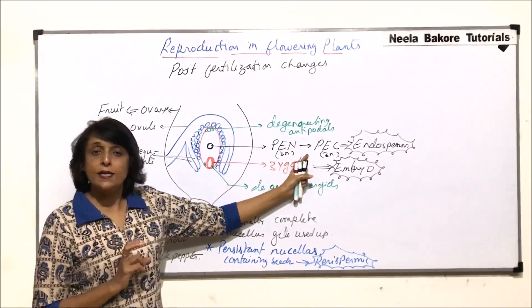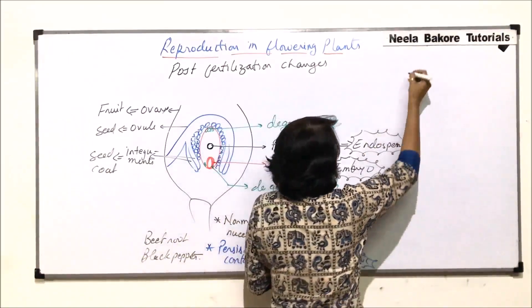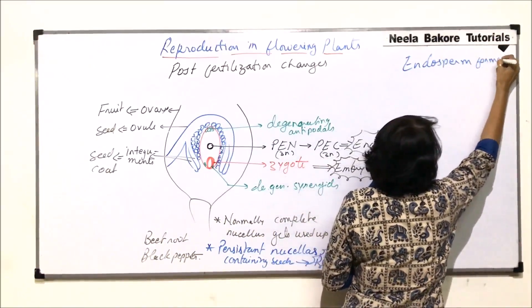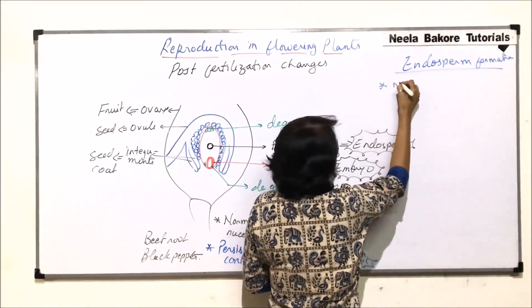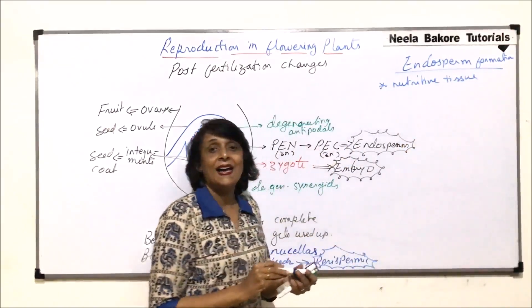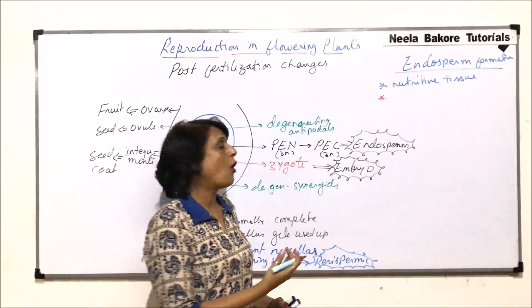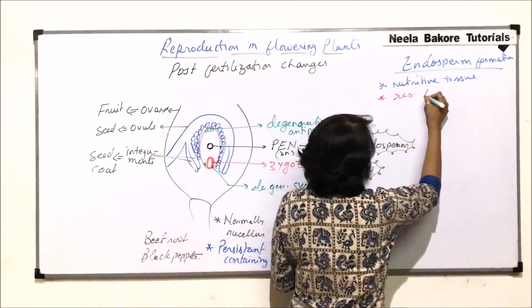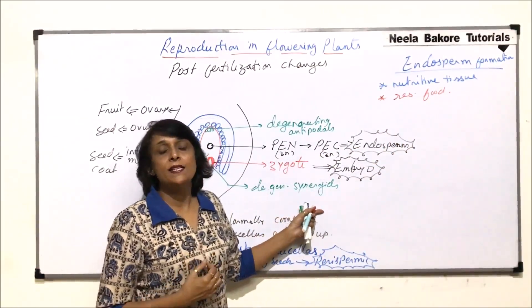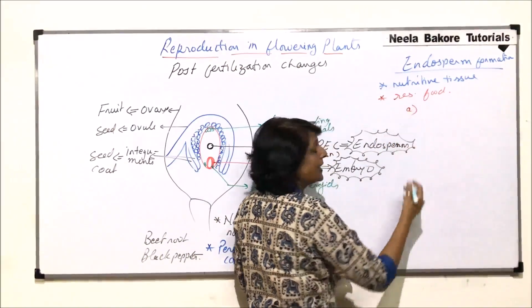Now let us come to one important post-fertilization change: the formation of endosperm. Endosperm is the nutritive tissue — it is going to supply nourishment to the developing embryo. It acts as reserve food and supplies all the required nutrients to the developing embryo.